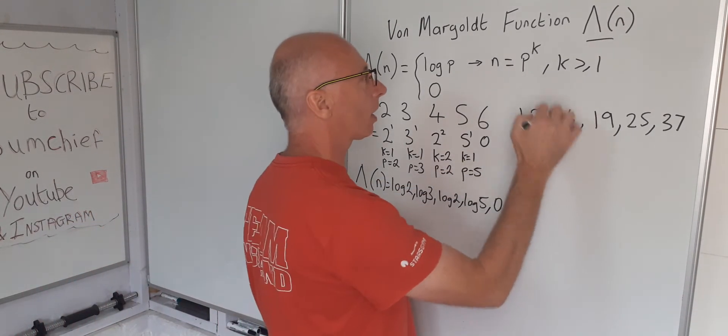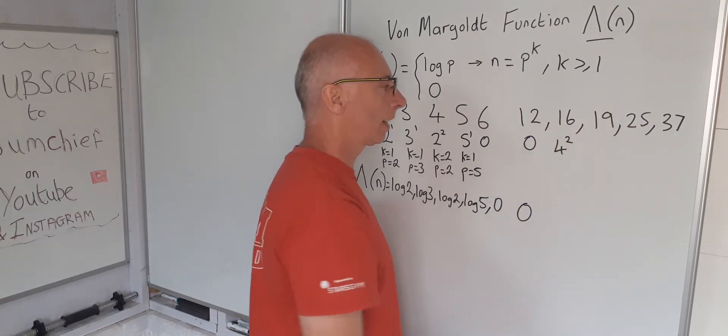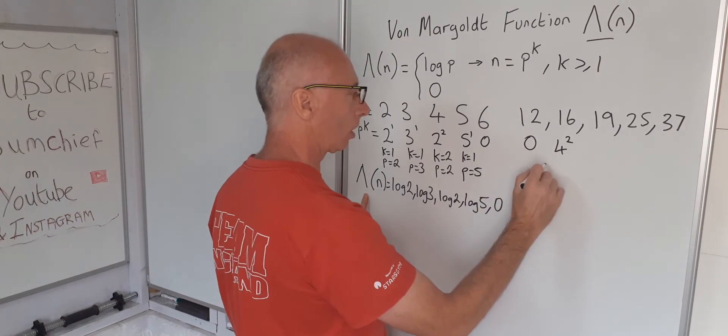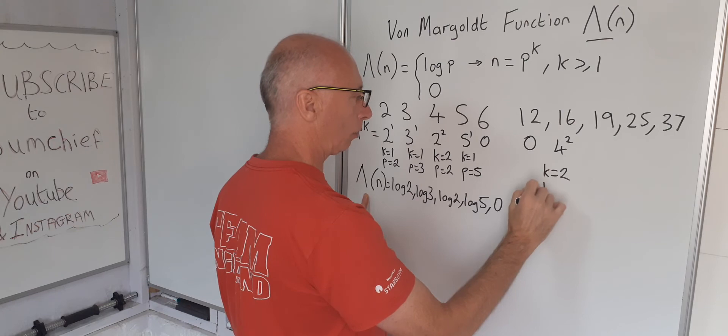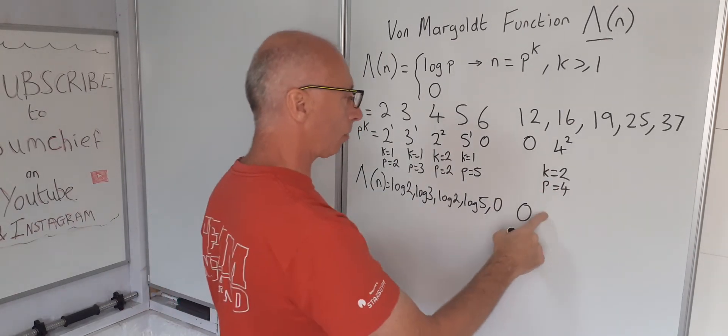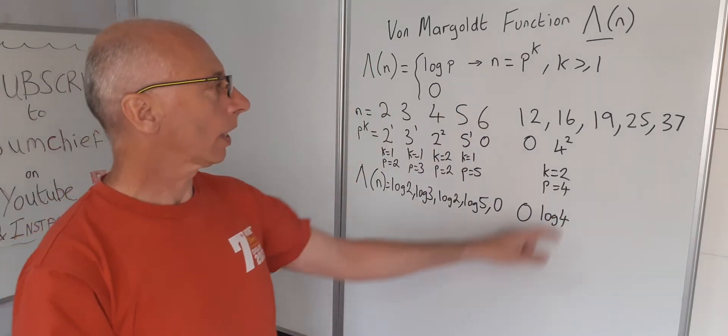Sixteen. We've got sixteen. Sixteen equals four squared. So in this case K equals two, P equals four. In which case we get the value for the von Mangoldt function log of four. Okay.